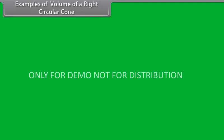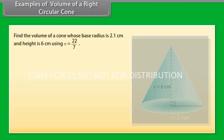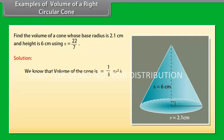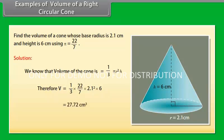Let us now solve an example. Find the volume of a cone whose base radius is 2.1 cm and height is 6 cm, using π = 22/7. We know that the volume of a cone is (1/3)πr²h. Therefore V = (1/3) × (22/7) × (2.1)² × 6, which is equal to 27.72 cm³.